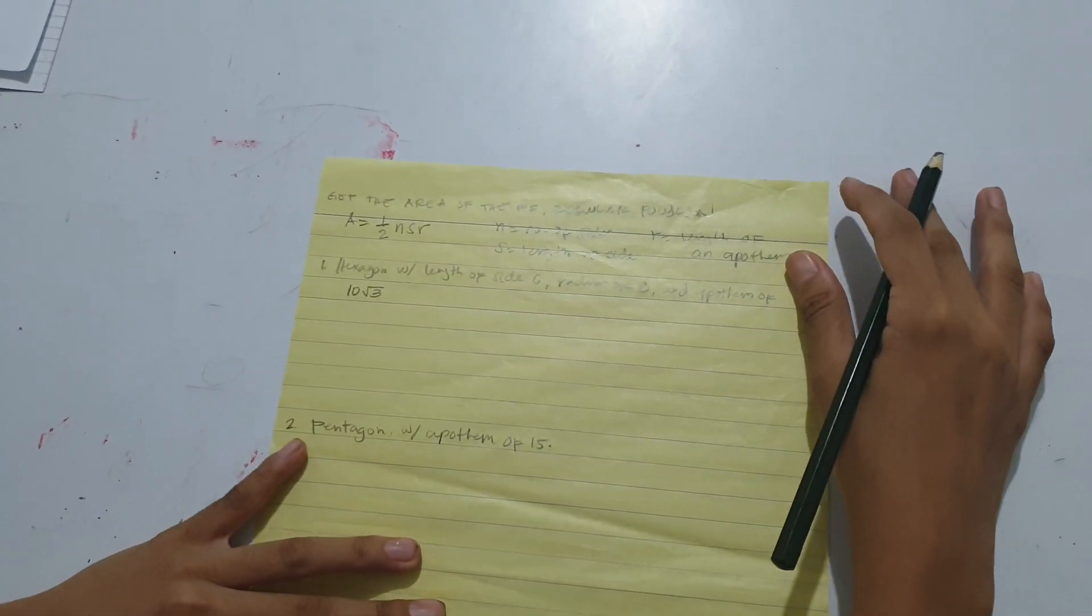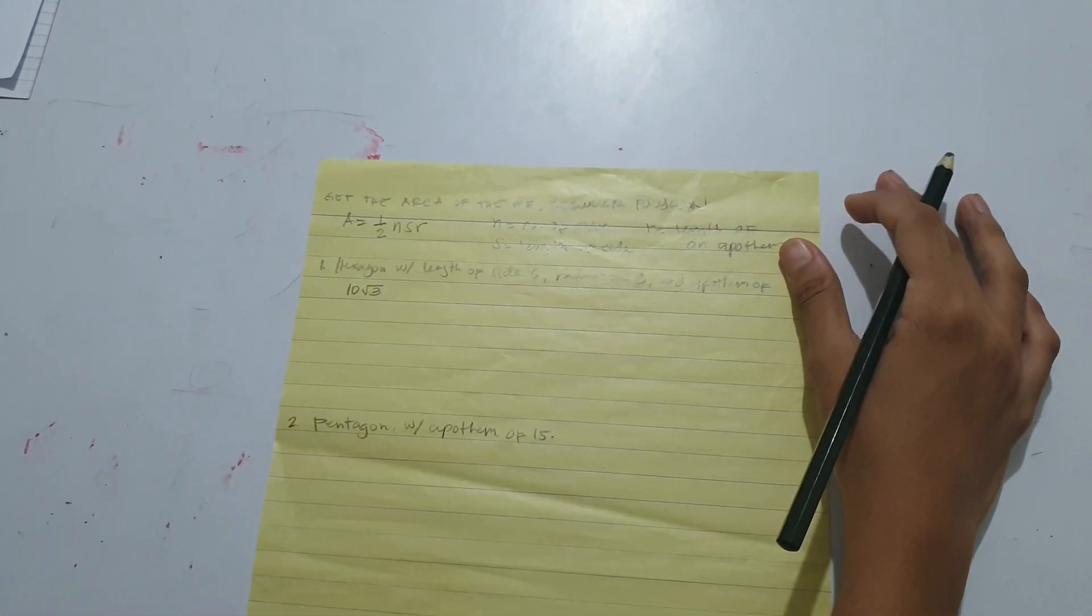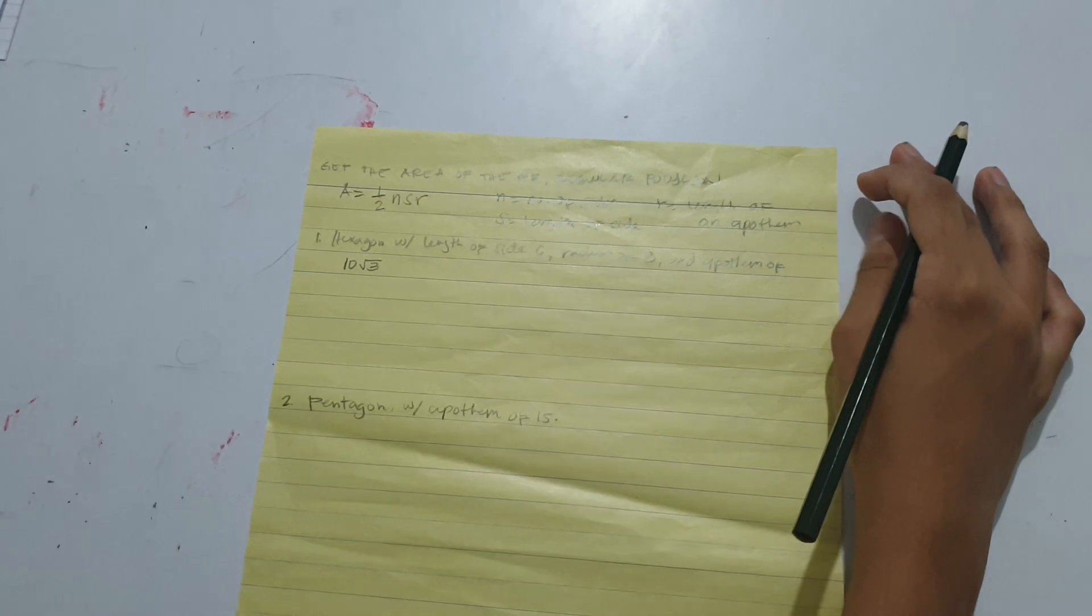Example number one: hexagon with length of side six, radius of eight, and apothem of ten square root of three.